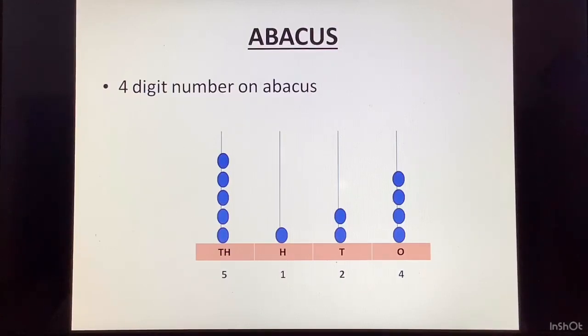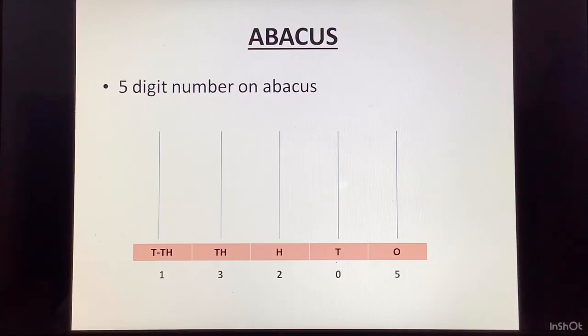Now, let us do 5 digit number on the Abacus. Now, this example, we have 13,205. We have to represent this on the Abacus. We will start in the same manner. Ones place, we have 5. So, we will put 5 beads in the ones column. Tens place, we have 0. So, we will not put any bead there. We will directly go to the hundreds column. Here, we have 2. So, 2 beads in hundreds column. Then, thousands place, we have 3. So, 3 beads in thousands column. And, ten thousand column, we have 1. So, only 1 bead will come in the ten thousand column. This is about Abacus.